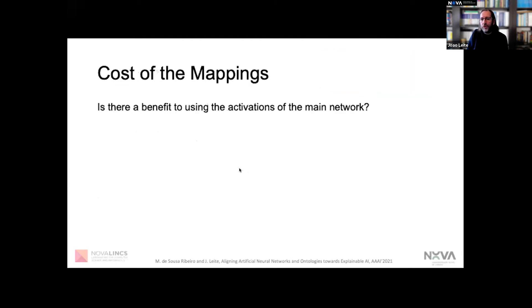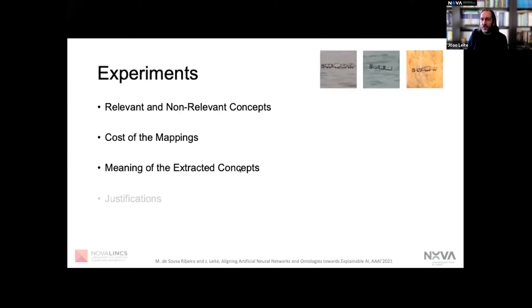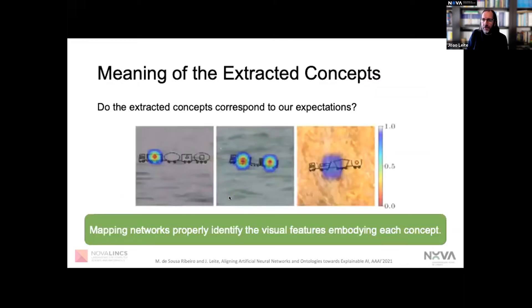Of course, one very important question is whether these extracted concepts are what we expect them to be, or whether they're just based on spurious correlations between the input data. We were able to show, using heat maps and other methods, that they actually embody the right kinds of features – they're looking at the right parts of the images when they are extracted.